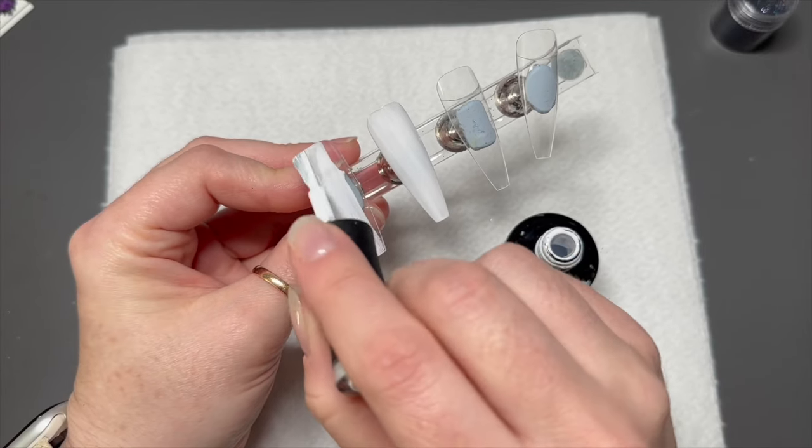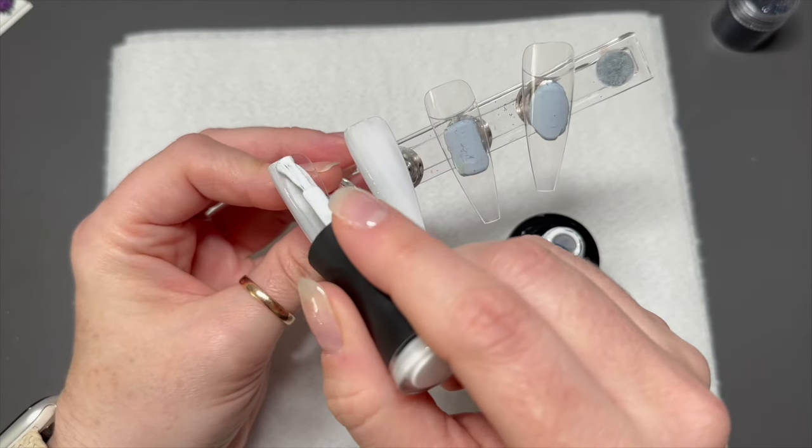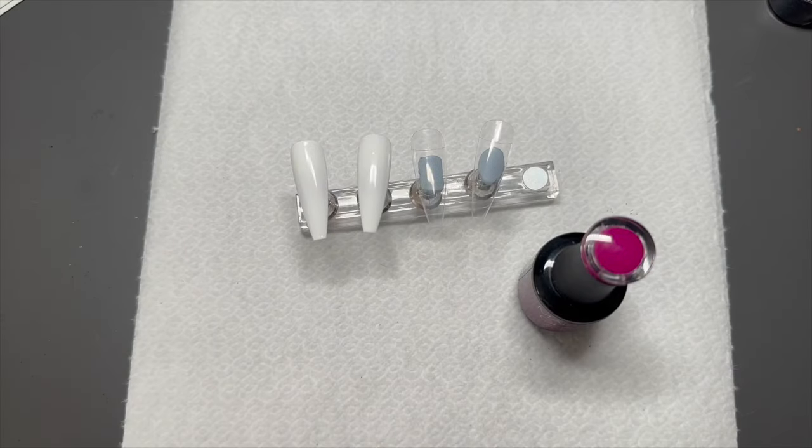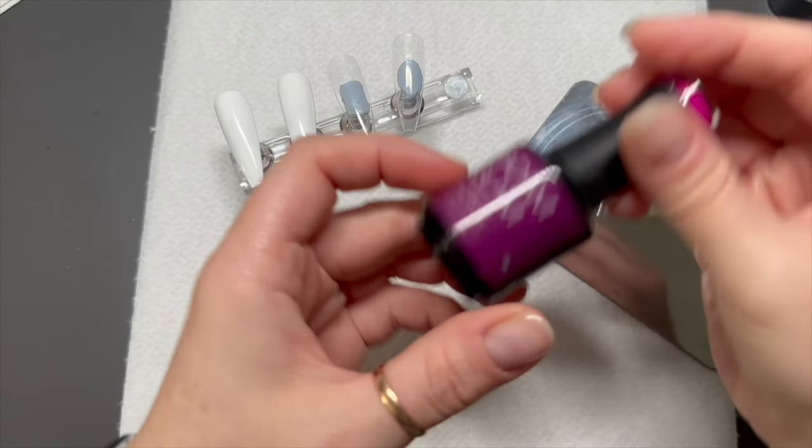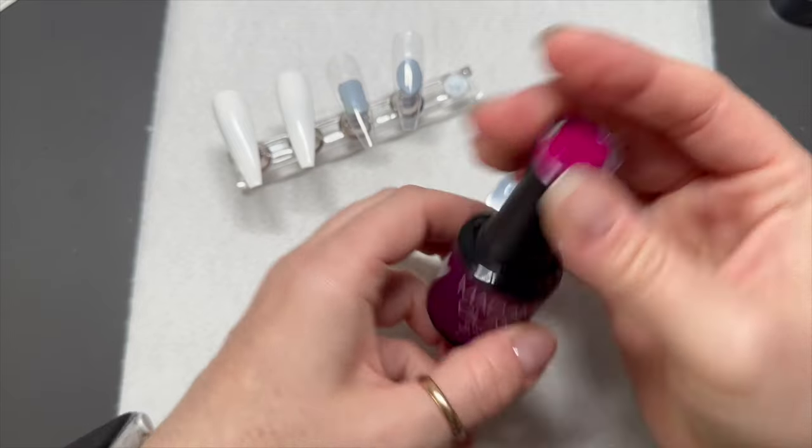I just wasn't sure what I was going to do on the other two nails at this point. This was another wing-it set, so two coats of white on all four nails and curing in the lamp for 30 seconds each coat.